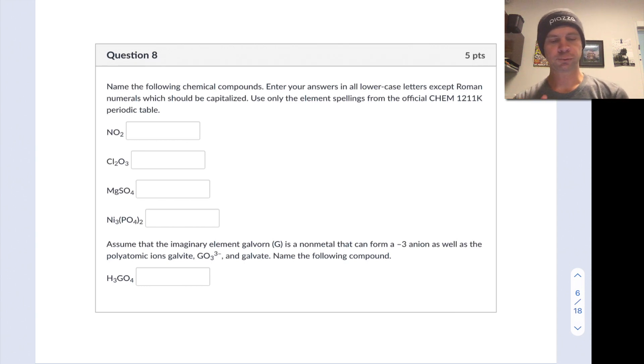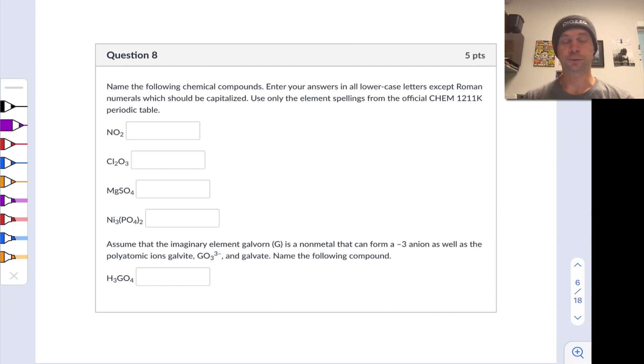This first question related to chapter 3 is question 8 and it's all about nomenclature. Name the following chemical compounds including a really interesting example at the end of the problem. So first let's start with NO2. N is the symbol for nitrogen, O the symbol for oxygen.